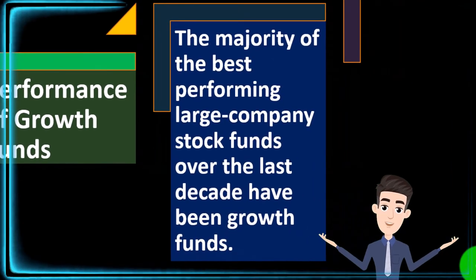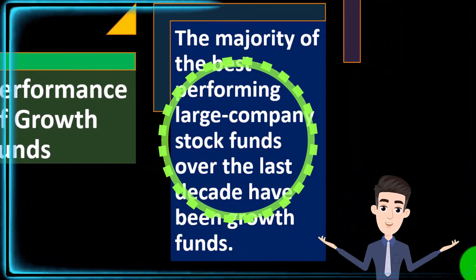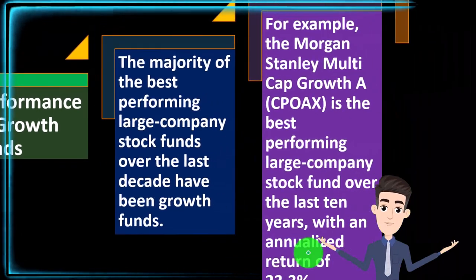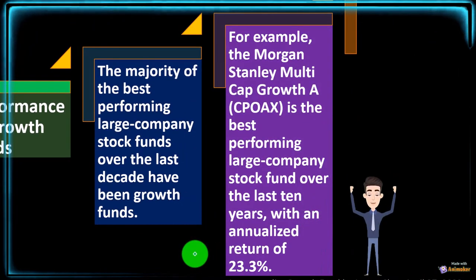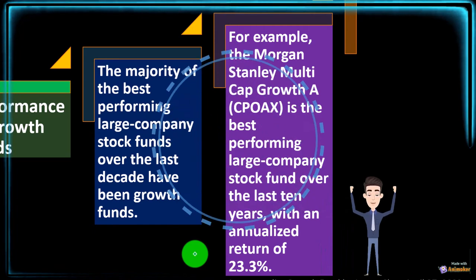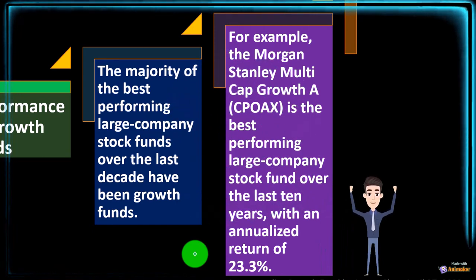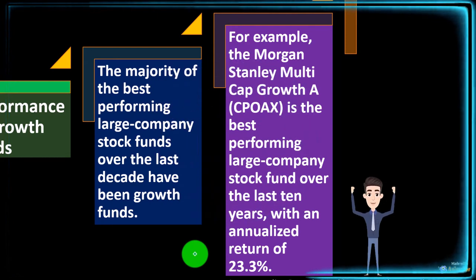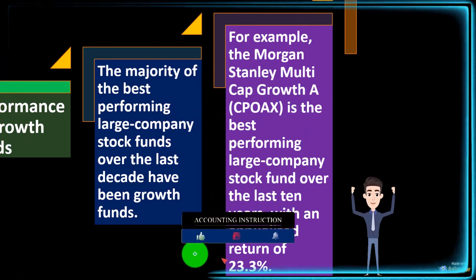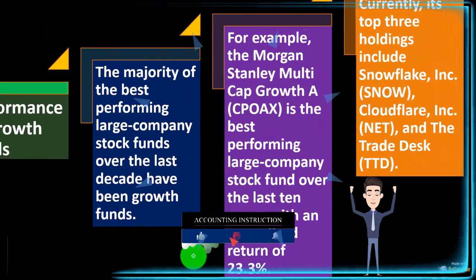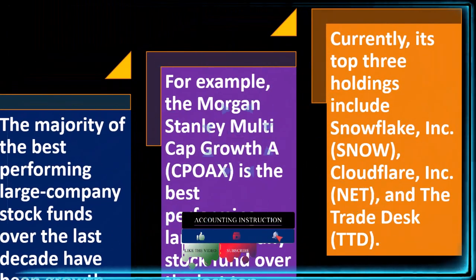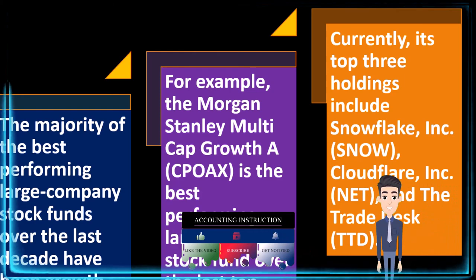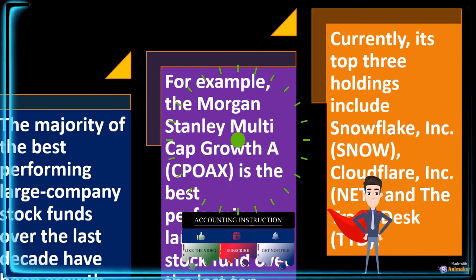Performance of growth funds: the majority of the best-performing large company stock funds over the last decade have been growth funds. For example, the Morgan Stanley Multi-Cap Growth A (CPOA X) is the best-performing large company stock fund over the last 10 years with an annual return of 23.3 percent. Its top three holdings currently include Snowflake Incorporated (SNOW), Cloudflare Incorporated (NET), and The Trade Desk (TTD).